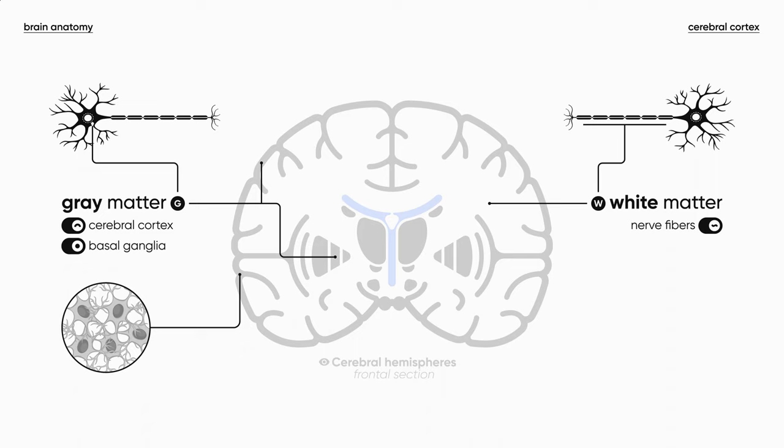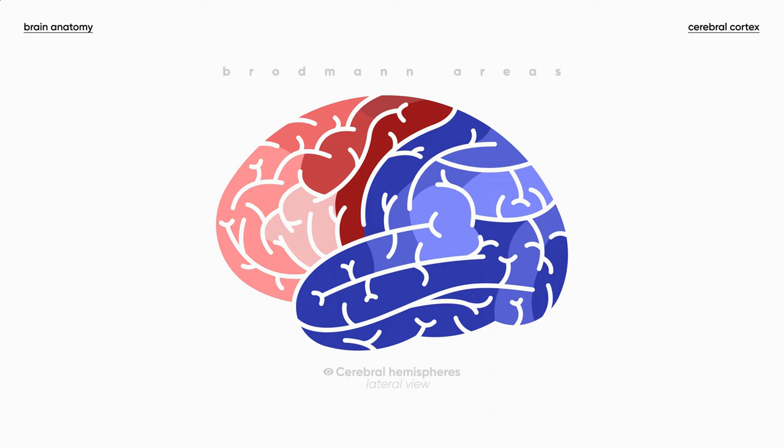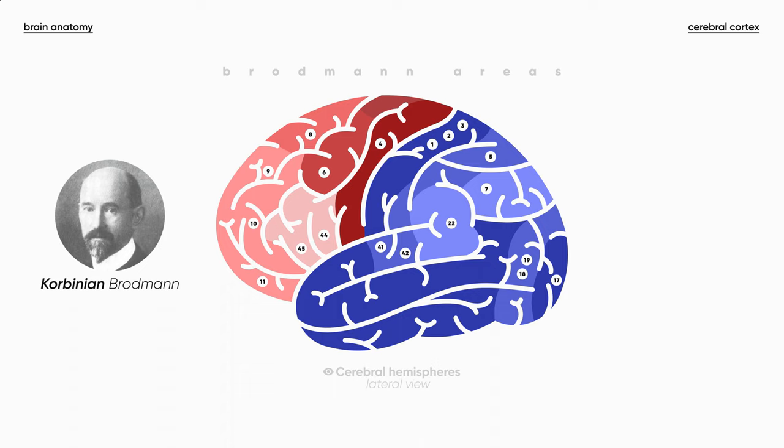The cerebral cortex consists of grey matter, represented by the neuronal cell bodies that produce nerve impulses. The cerebral cortex is divided into 52 Brodmann areas, each of which has its own histological characteristics and its own function.